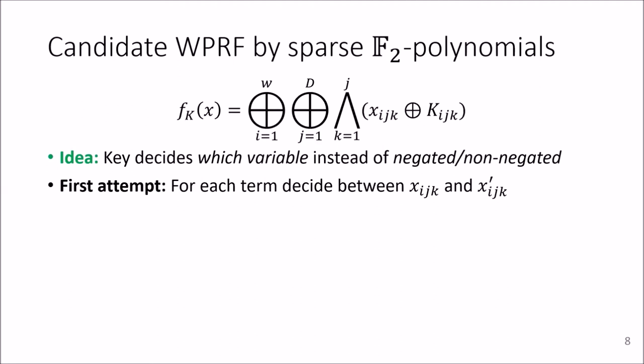And of course, the simplest attempt, the first attempt that you would try out, is just take two variables. So add another copy of variables to X, and then for each term, decide between Xijk and Xijk prime. Unfortunately, that does not work.